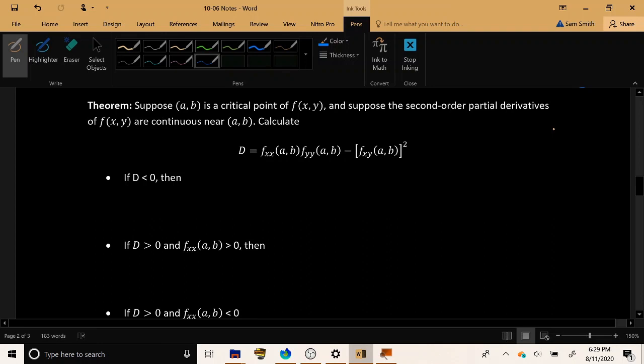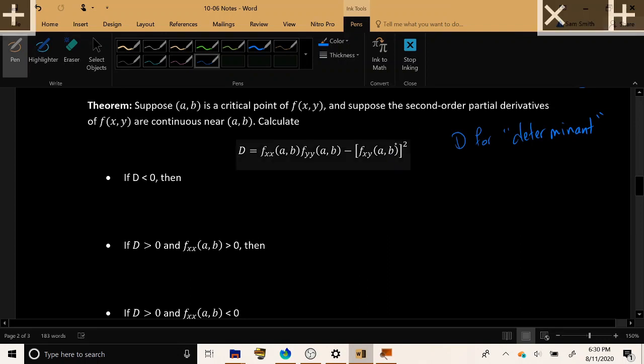Suppose that (a, b) is a critical point of f(x, y). So we're already assuming that the gradient vector is 0 or undefined at that point. Suppose that the second order partial derivatives are continuous. This is just a bit of fine print to make sure that our function is nice enough to qualify to use the second derivative test. The first thing that you need to do in the test is you need to calculate this quantity called capital D. This D stands for something called determinant.